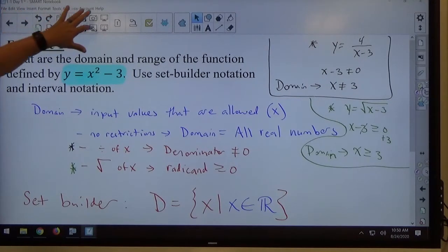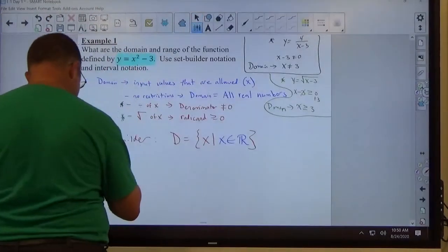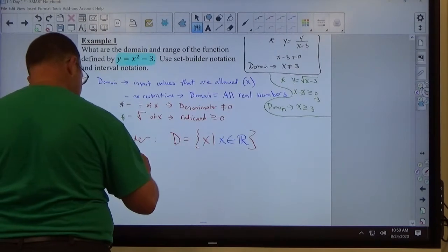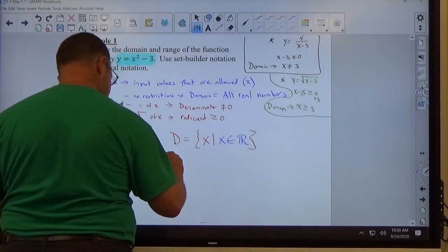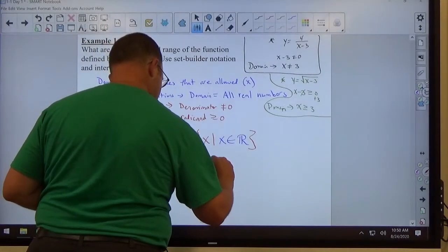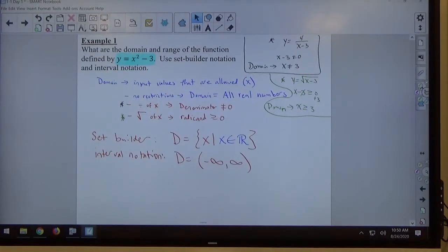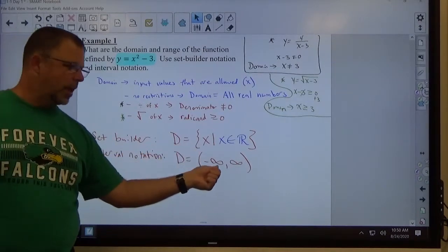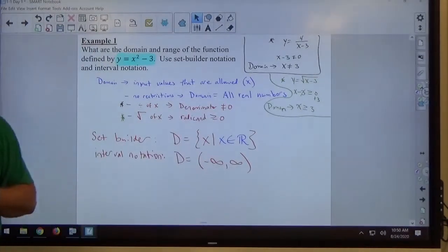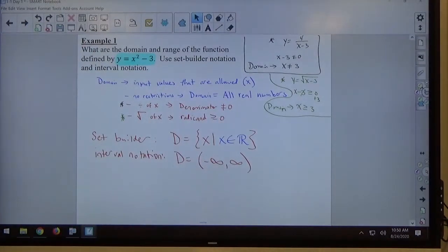Here is interval notation. You're going to like this better. All interval notation is saying everything from here to here. If it's all real numbers, you're starting at negative infinity, ending at positive infinity. That's interval notation. Domain equals everything from negative infinity to positive infinity, which is also the way of saying all real numbers. So that's domain.